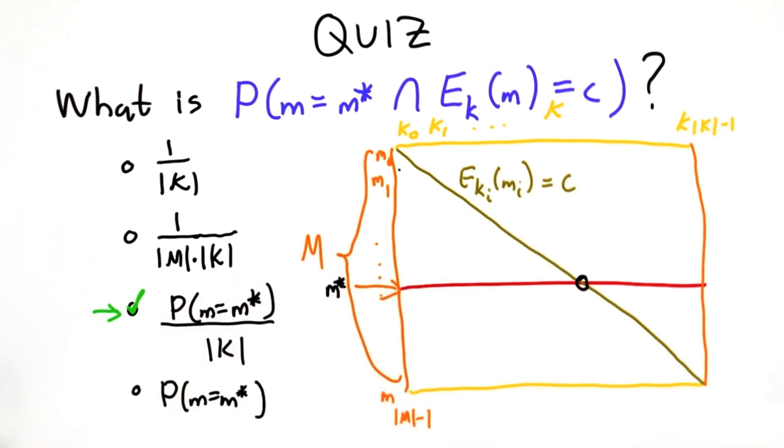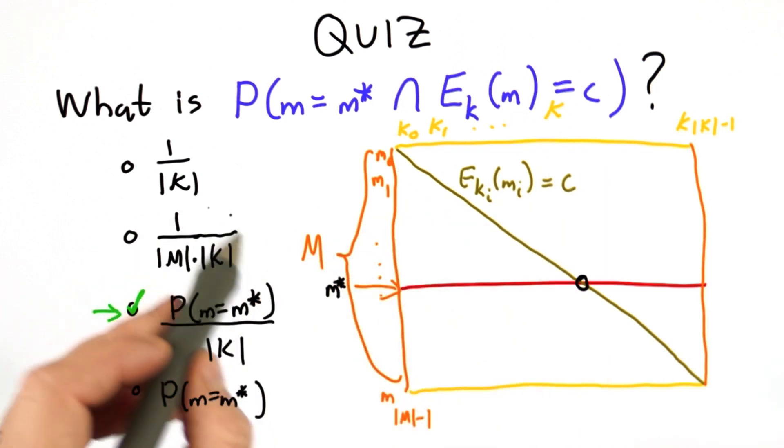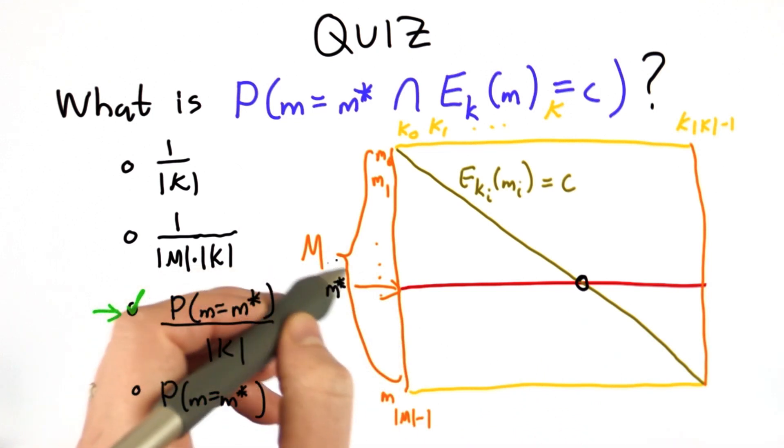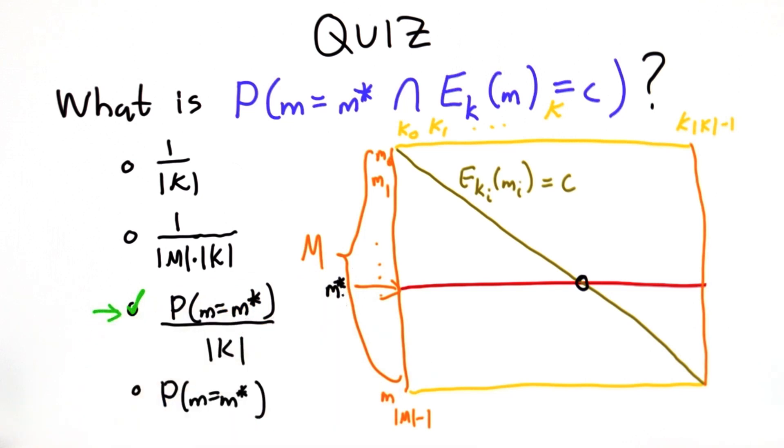If the distributions were normal, that would indeed be the correct answer, that it's one point and our space is size of M times size of K. But the distribution isn't normal. We don't want to make any assumptions about the distribution of M.